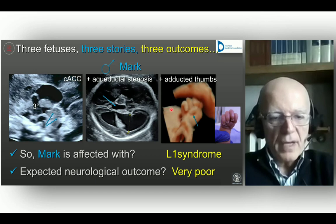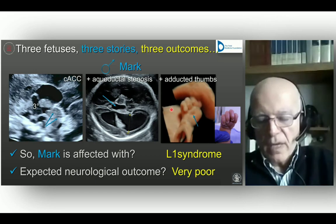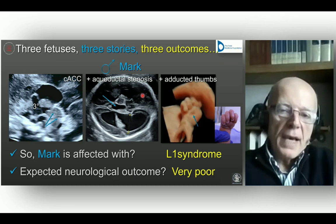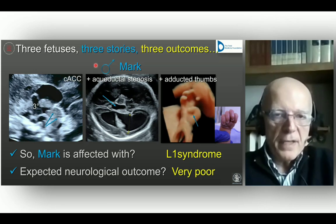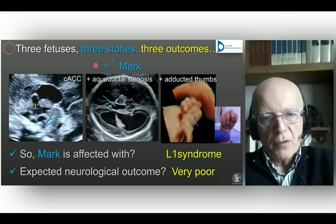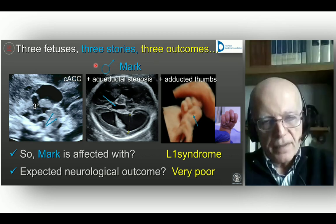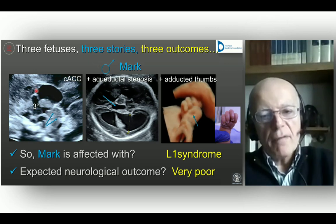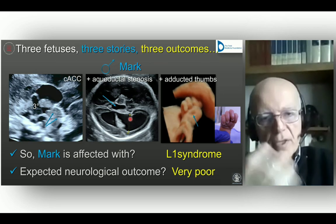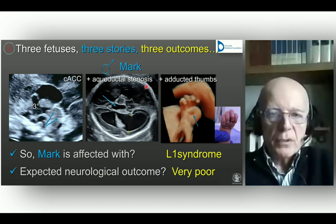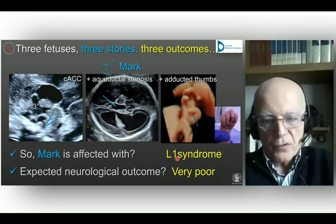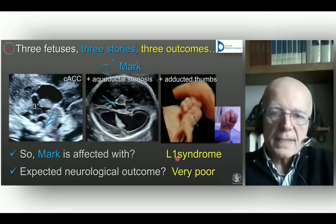You have to look at the hands — because if you have a boy with agenesis of the corpus callosum, aqueductal stenosis, or both, you may have this very severe condition, the signature sign of which is the adducted thumb seen on 4D ultrasound and confirmed after birth. The expected neurological outcome for Mark is indeed very, very poor. Cases often have a positive family history of mental retardation in males. So anytime you have ACC with very large ventricles suggesting aqueductal stenosis or hydrocephalus, go to the hands — if you see adducted thumbs, you have your diagnosis.